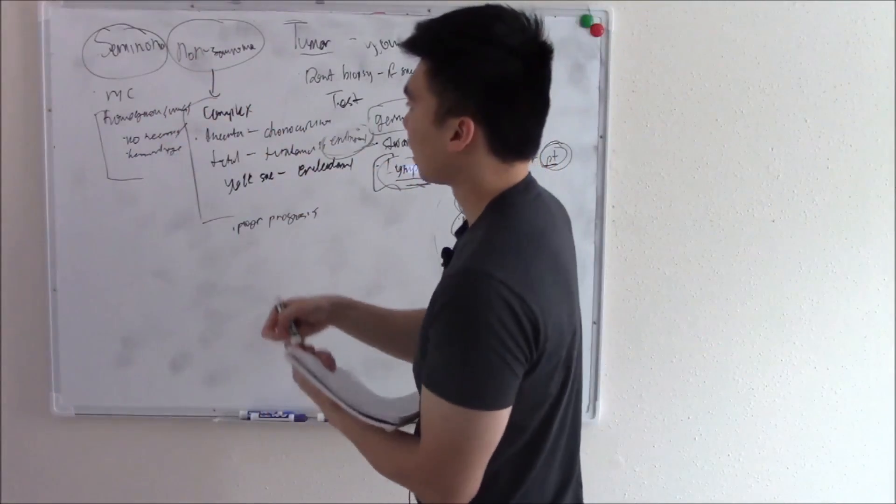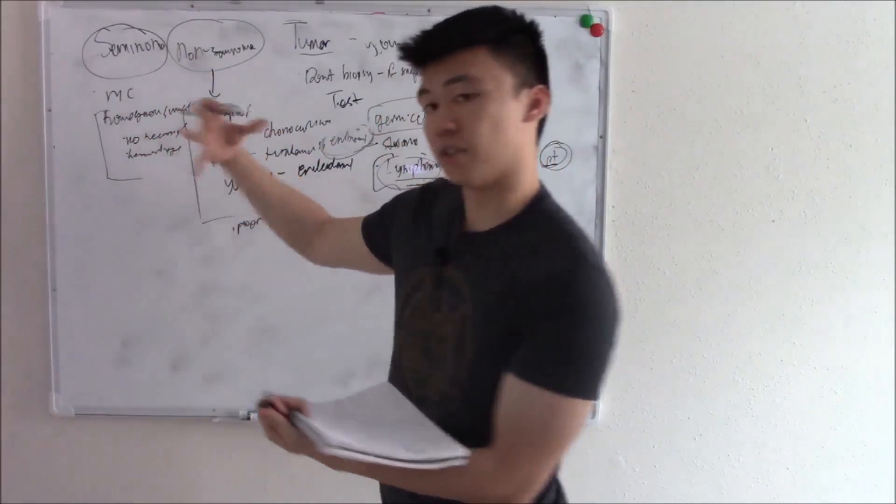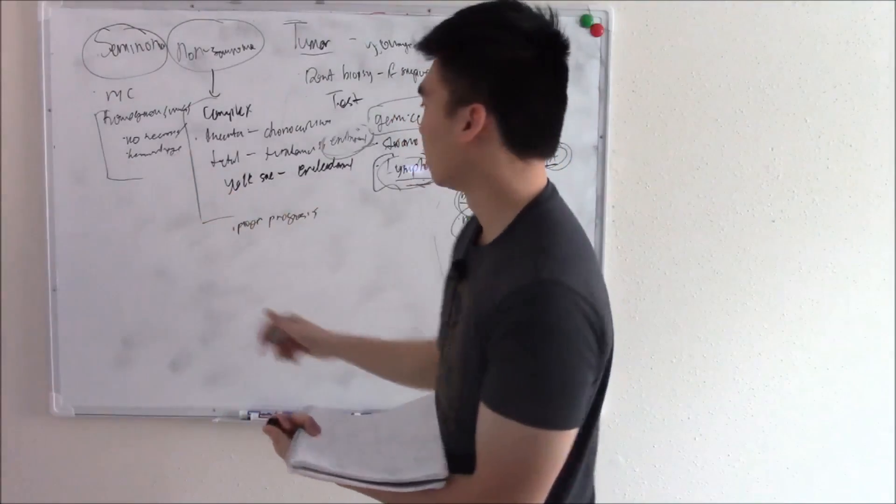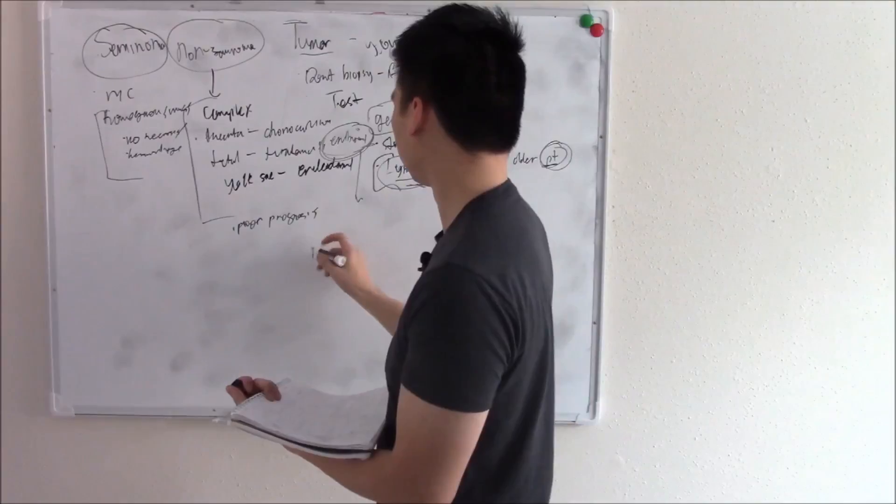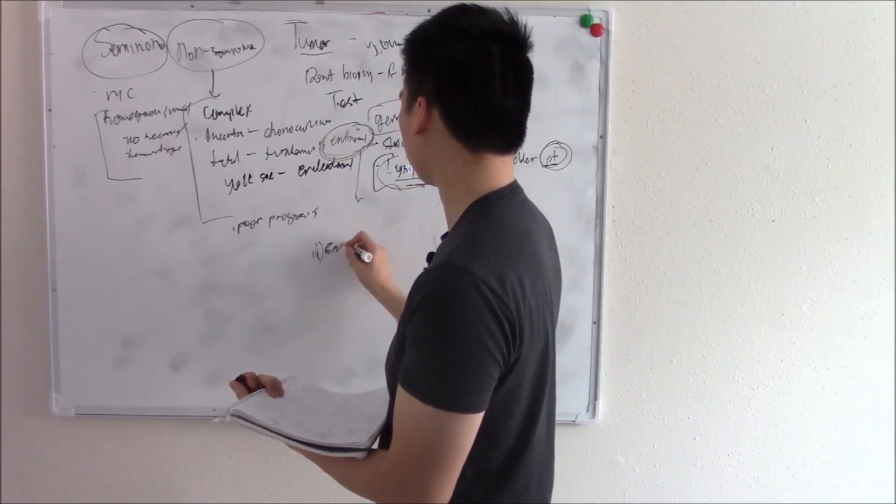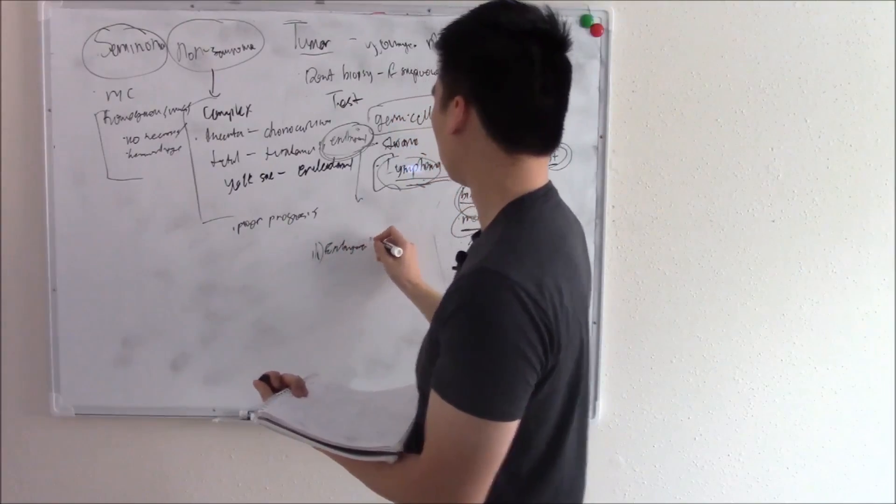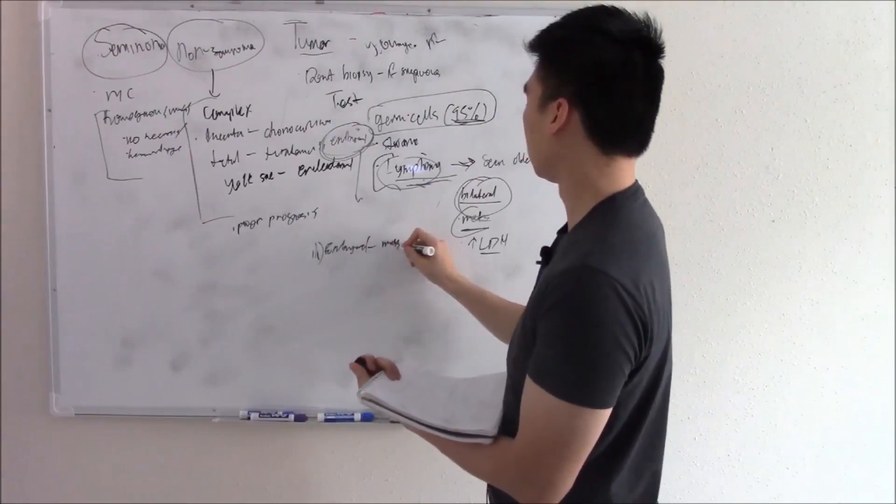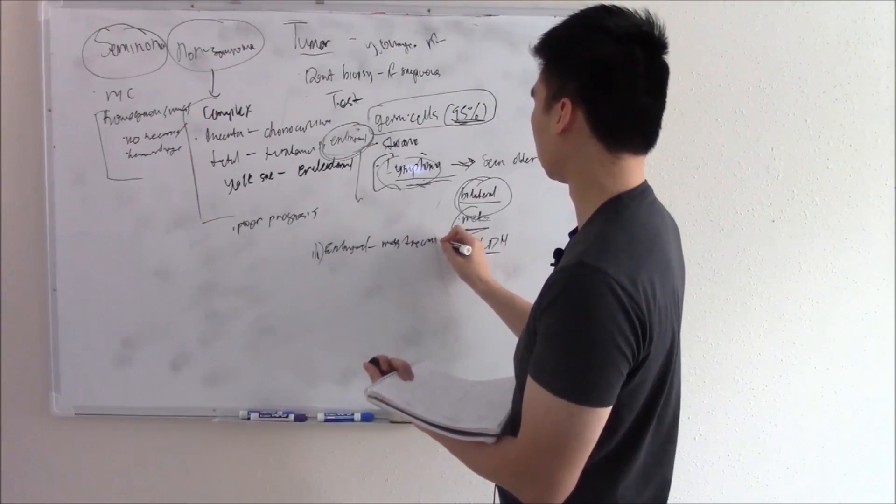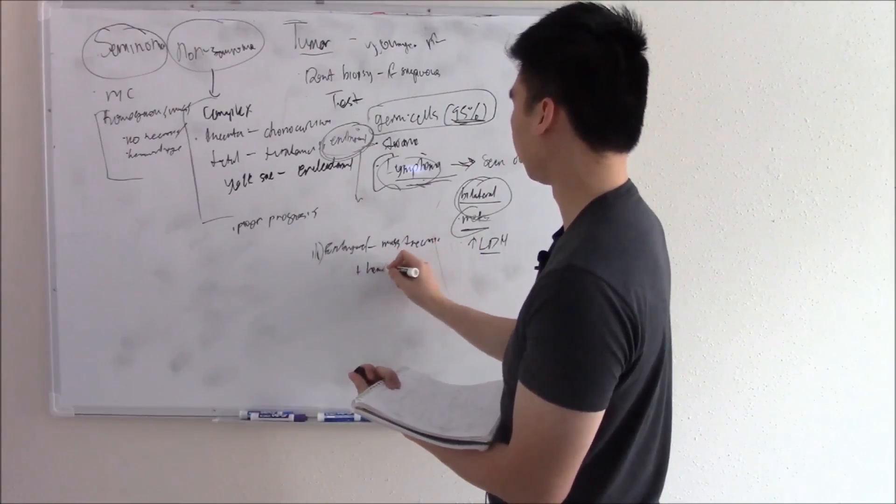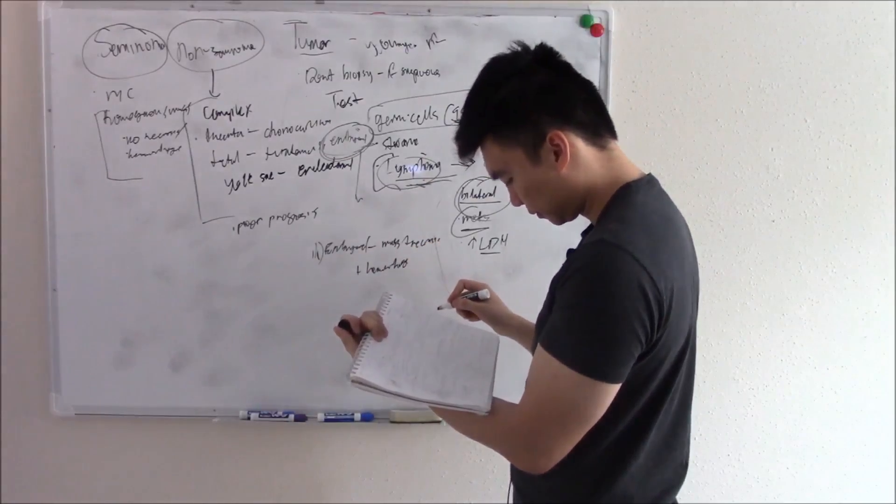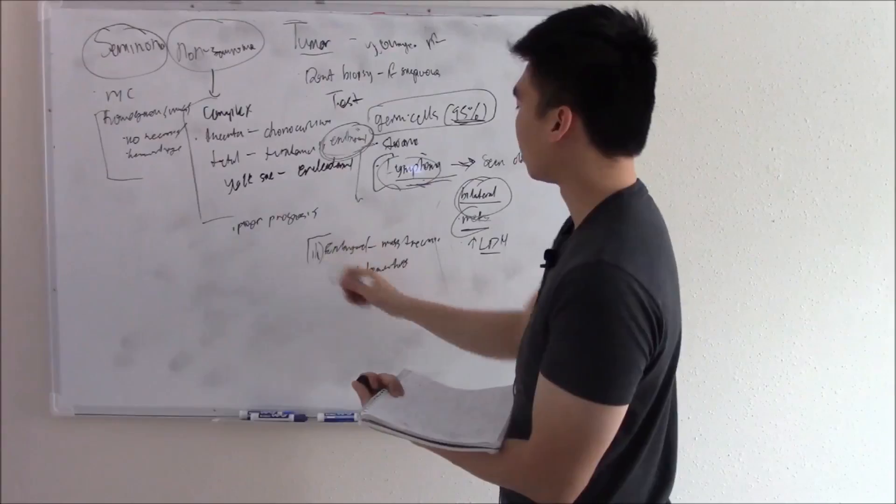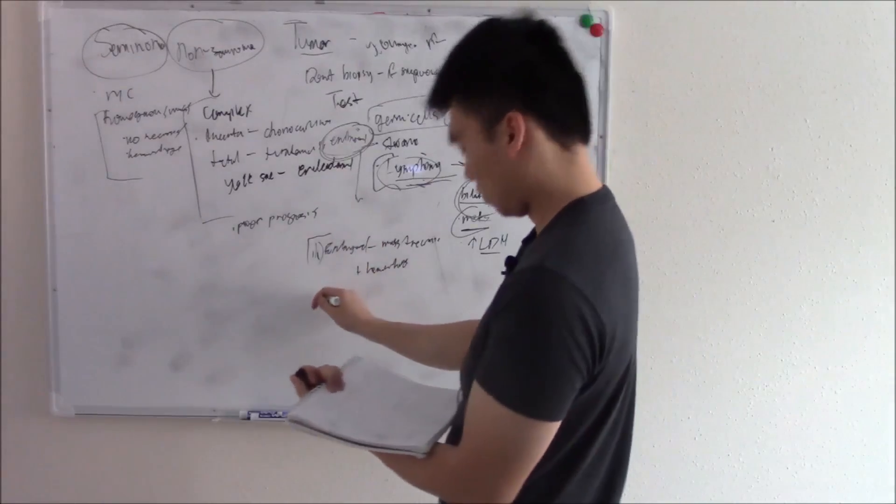Let's move on to non-seminomas. If you see a homogeneous mass that does have necrosis and does have hemorrhage, then you're thinking of embryonal tumors. So embryonal will be a mass with necrosis with hemorrhage. I think that's all I want to talk about for embryonal. Move on to the next one.